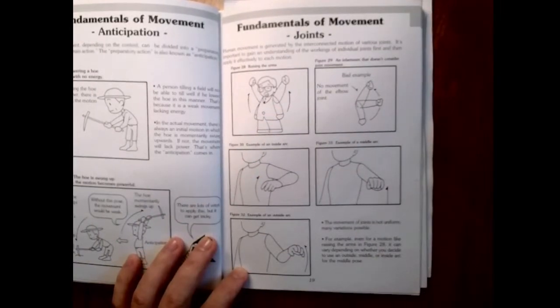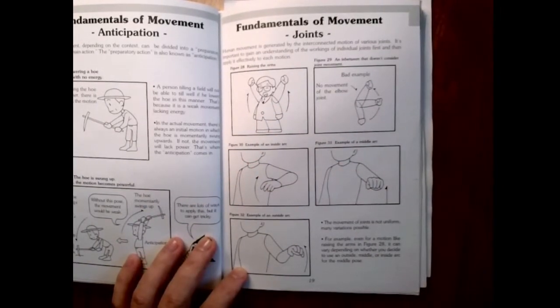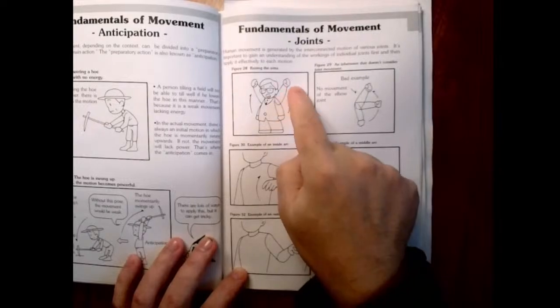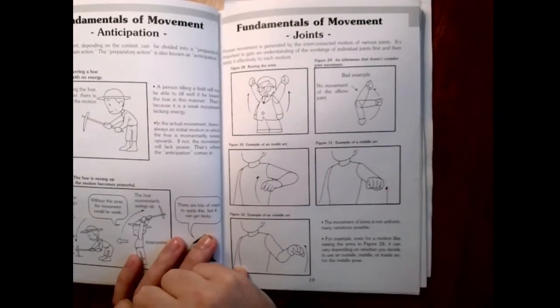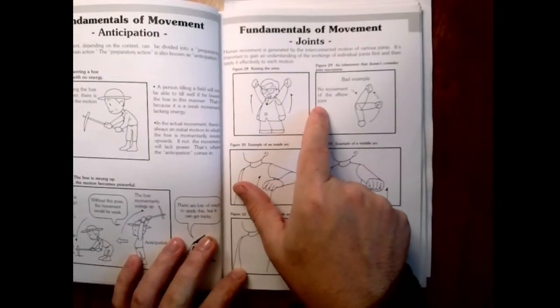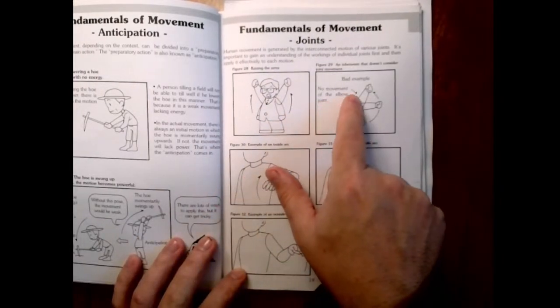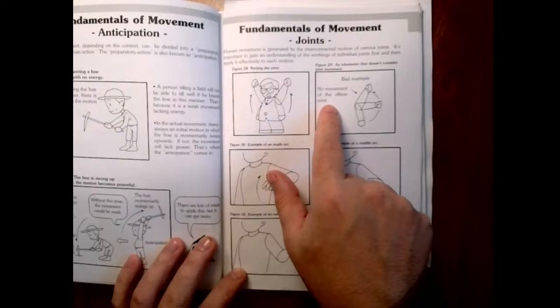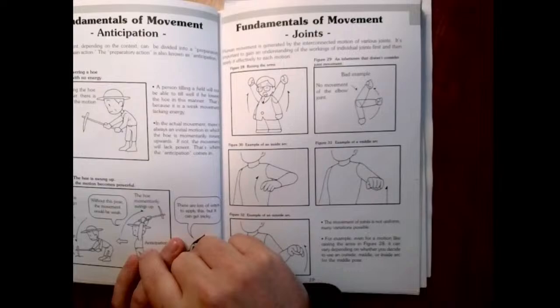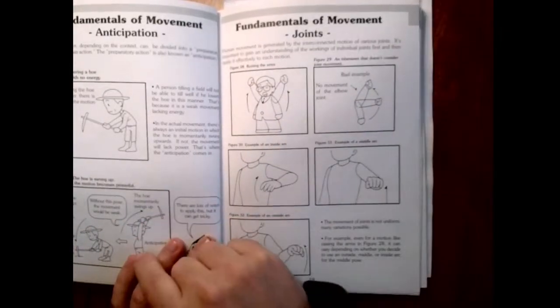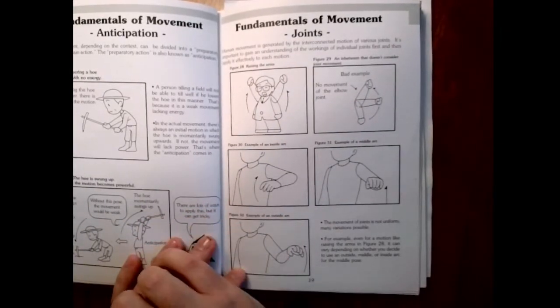So this figure 28, raising the arms. It's pretty simple, just goes from this pose to lifting the arms. It says that this is a bad example because there's no movement of the elbow joint. So you don't see any bending of the joint. The arm just goes straight up mechanically, like a clock arm or something.